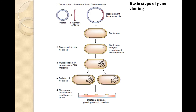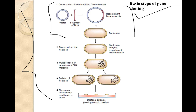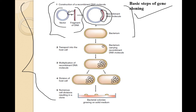Now I will show you what the entire step looks like. The procedure begins with the construction of a recombinant DNA molecule, starting with the vector — a circular DNA. The fragment of DNA containing the required gene is ligated onto the circular DNA, and this combined molecule is called the recombinant DNA molecule.